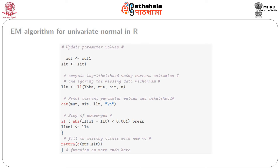We add convergence criteria: if the absolute value of the difference between the previous log-likelihood LLtM1 and the present log-likelihood LLt is less than 0.001, we stop the computation by issuing a break. So if this condition is satisfied — the absolute difference of the two log-likelihoods in any two steps is less than 0.001 — we stop. We then set LLtM1 equal to LLt for the next iteration.